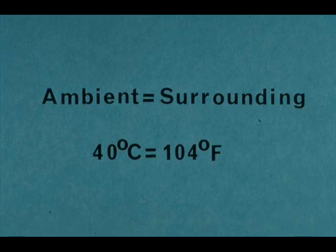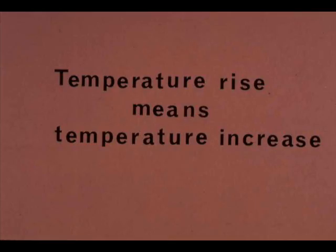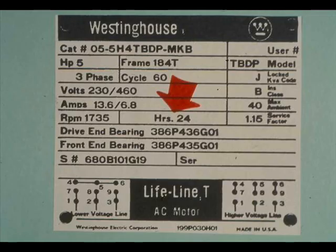Ambient means surrounding. This motor is designed for operation in a space where the temperature is not more than 40 degrees centigrade or 104 degrees Fahrenheit. Temperature rise means temperature increase, so the manufacturer could have chosen to rate this motor as rise 90 degrees centigrade. The time rating must be stated — that is, the length of time the motor can be run continuously without damage under design conditions. The usual ratings are 5 minutes, 15 minutes, 30 minutes, 60 minutes, and continuous. The time rating for this motor is 24 hours.